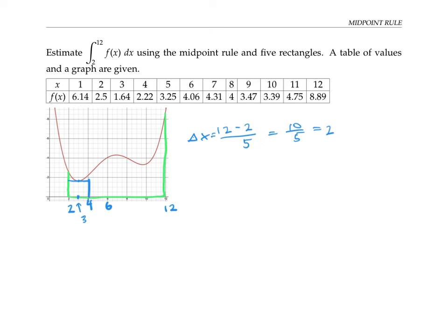The subinterval from 4 to 6 has a midpoint of 5, and I use the function's value at 5 to find the height of my rectangle. Similarly, I use the midpoints at 7, 9, and 11, and find the height of my function there to give the heights of the next three rectangles.